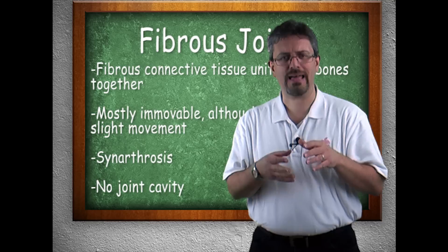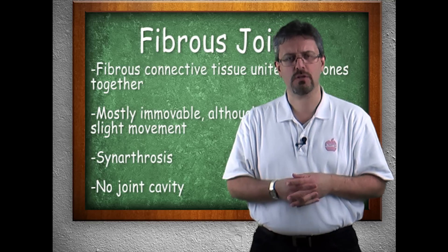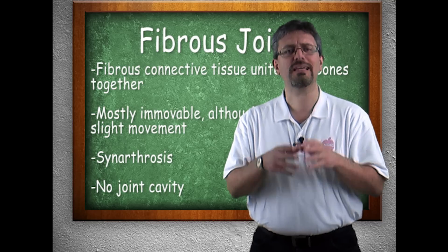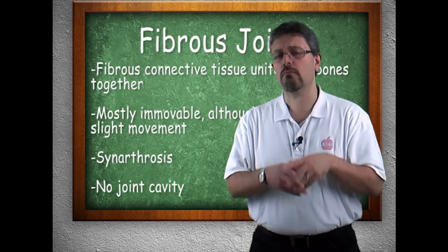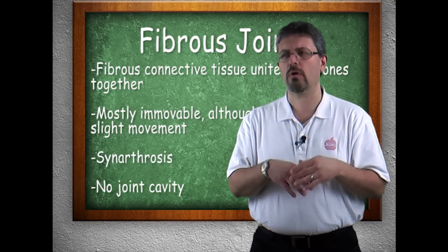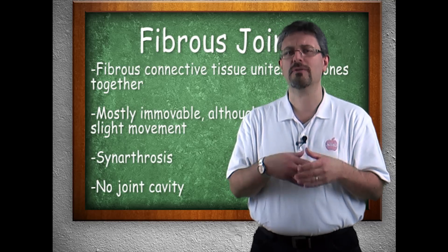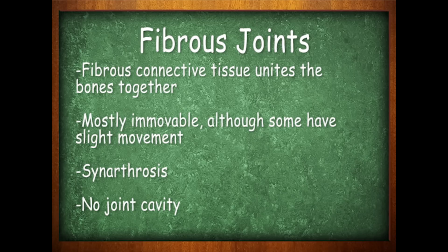The fibrous joints are usually the most immovable. The most immovable kind of joints are known as synarthrosis — there's not a lot of motion or movement here, if any. They're usually joined together by fibrous connective tissue.